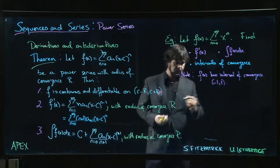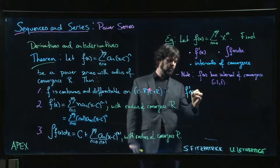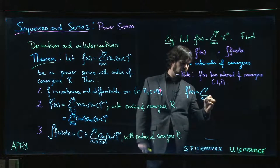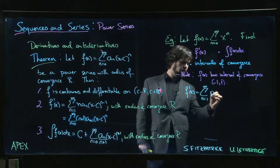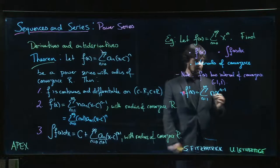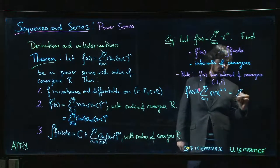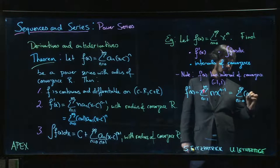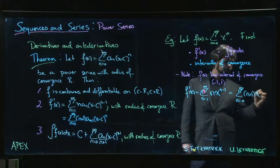f'(x), we just take the derivative term by term, and so we get the sum from n=1 to infinity of n·x^(n-1). And again, if we want to, we can write that as a sum from n=0 to infinity of (n+1)·x^n.